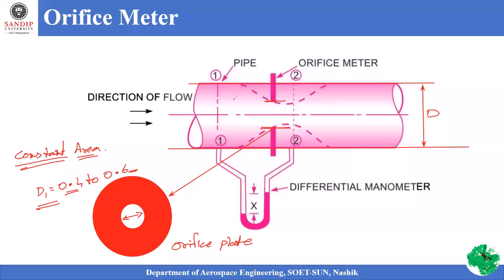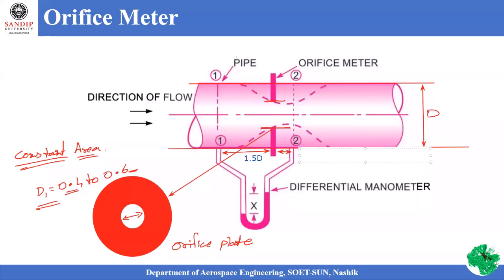The orifice plate is placed inside the meter construction and connected with a differential manometer. The manometer location should be at 1.5 times D ahead of the orifice plate, and the other end of the manometer should be connected at a distance of 0.5 times D behind the orifice plate.